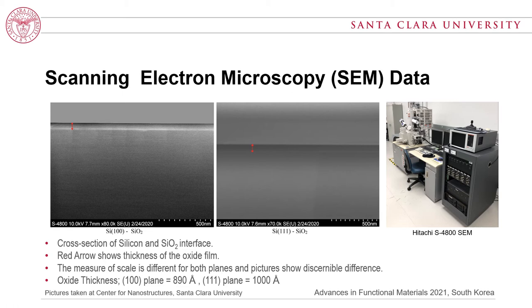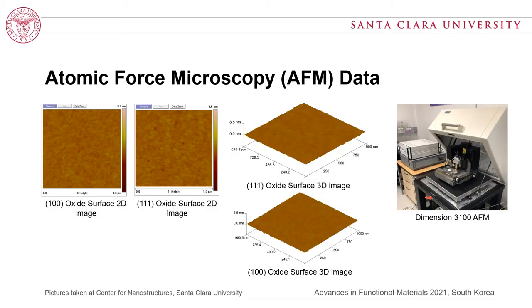Now let's look into the oxide surface data from atomic force microscopy. The pictures were gathered using Bruker's AFM. The 2D and 3D images of the 111 plane and 100 plane show hills and valleys on the surface of the oxide film. These are 1 micrometer by 1 micrometer surface scans performed using tapping mode. The surface roughness results will be shown in the following slides.